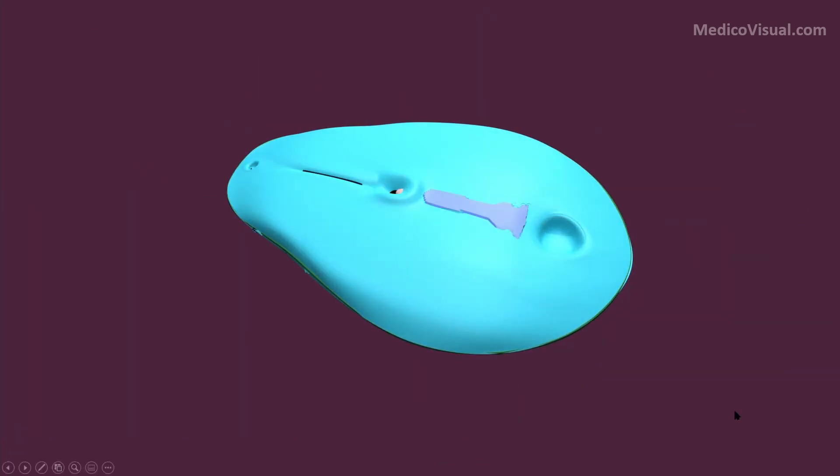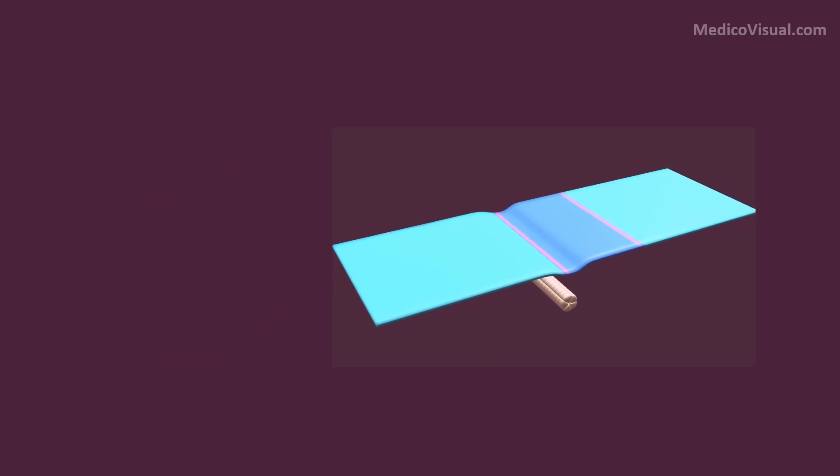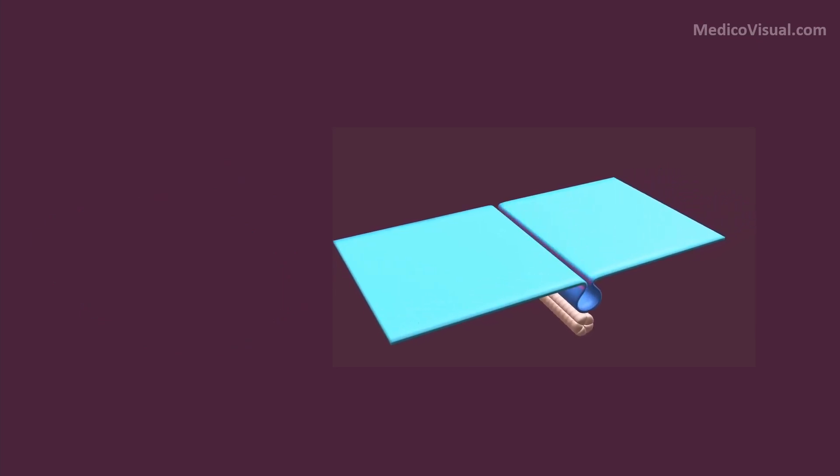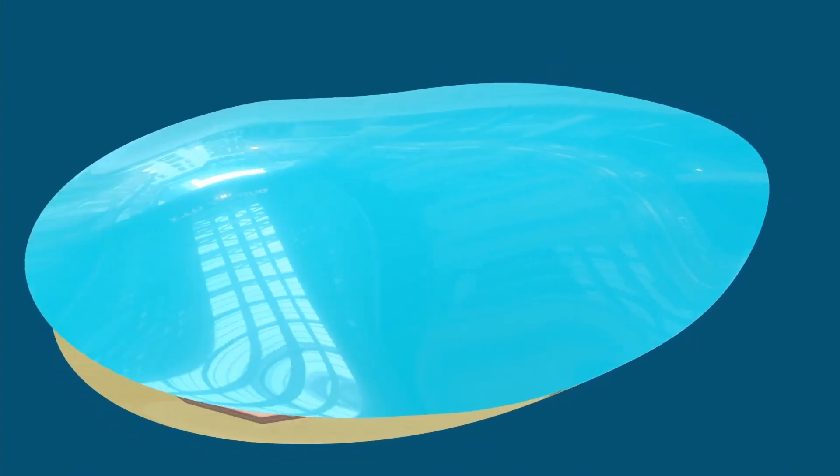Notochord induces the overlying ectoderm to thicken and form the neural plate. This thickened neural plate then folds inwards, joining the folds and leaving some cells called neural crest cells separated from it. This mating of folds results in formation of neural tube which is the precursor of future brain and spinal cord, and this process is called neurulation.